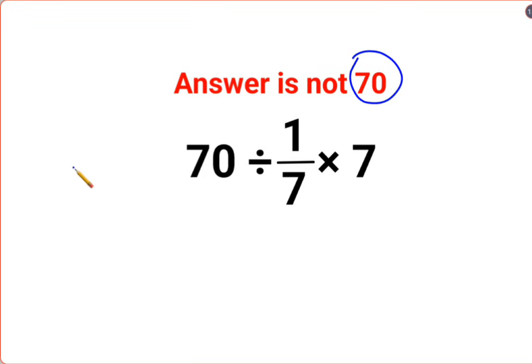See this is so easy, right? 70 divided by 1 upon 7 multiplied by 7, this and this gets cancelled. So you are just left with 70 divided by 1. The answer for that one is supposed to be just 70.